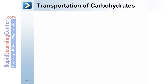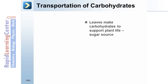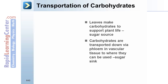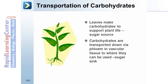Transportation of carbohydrates. Leaves make carbohydrates to support plant life — the sugar source. Carbohydrates are transported down via phloem in vascular tissue to where they can be used — the sugar sink.